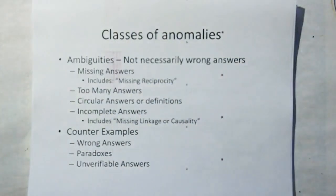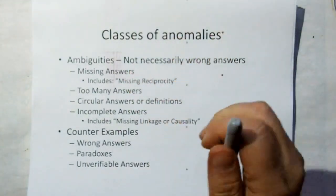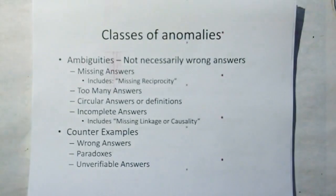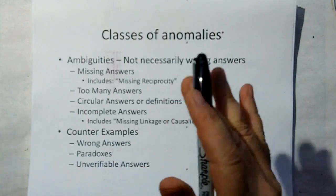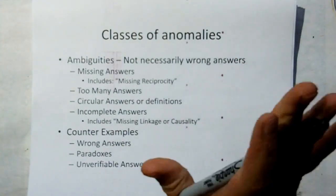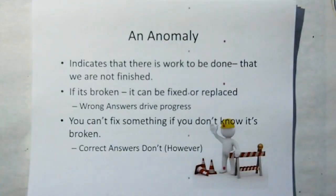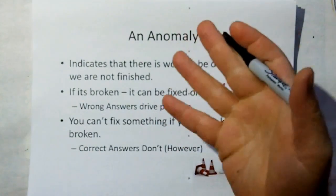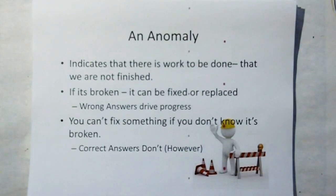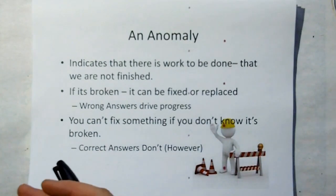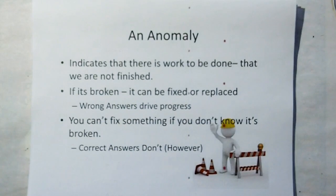Anomalies can be broken down into two basic classes right now. The first class is ambiguities — and interestingly, they're not necessarily wrong answers. The other class is counterexamples — those are clearly wrong answers. So essentially an anomaly, whether it's a wrong answer or an ambiguity, indicates that there's work to be done, that we are not finished with science. If it's broken, it can be fixed or replaced — wrong answers can drive progress.